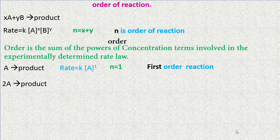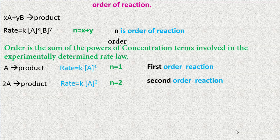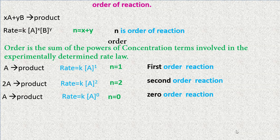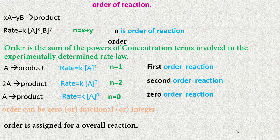For 2A → product, rate = k[A]^2, so n = 2: second order reaction, where rate depends on two concentration terms. For A → product with rate = k[A]^0, n = 0: zero order reaction, where rate does not depend on the initial concentration of the reactant. Order can be zero, fractional, or an integral number, and is assigned for the overall reaction.